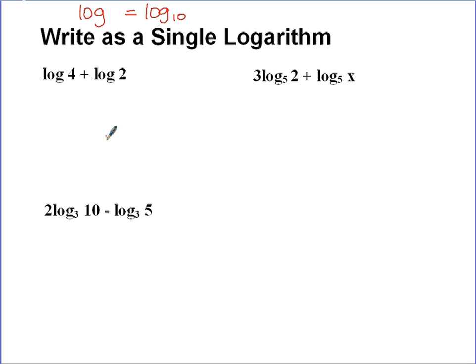Now the property when I'm adding two different logs is I can take the log of those two things multiplied. So 4 times 2, and I can rewrite this as log 8. You could write log base 10 of 8—that's the same exact thing, but this is sufficient.